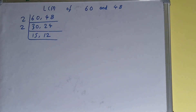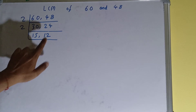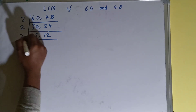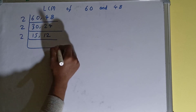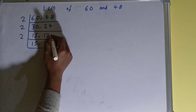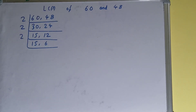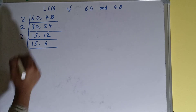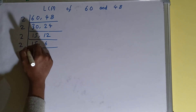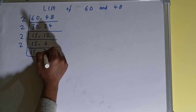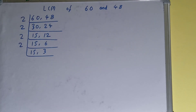Now only the second number is divisible by 2, not the first one, so we'll divide only the second number and just copy the first one down. The second number becomes 6. Again the second number is divisible by 2, so we divide again and copy the first one down — the second number becomes 3.